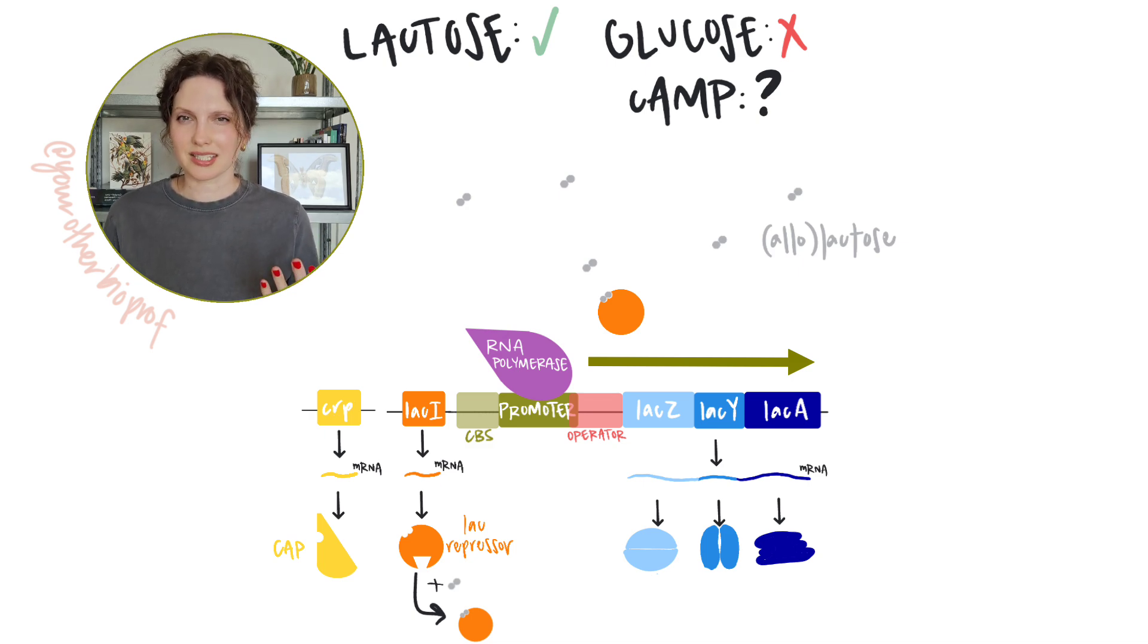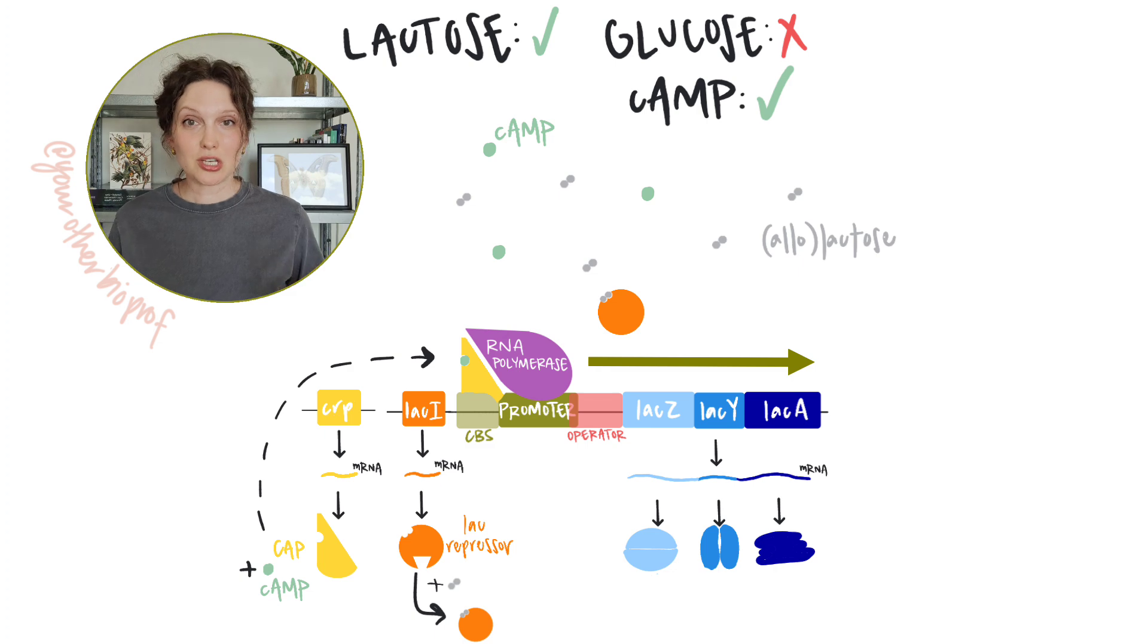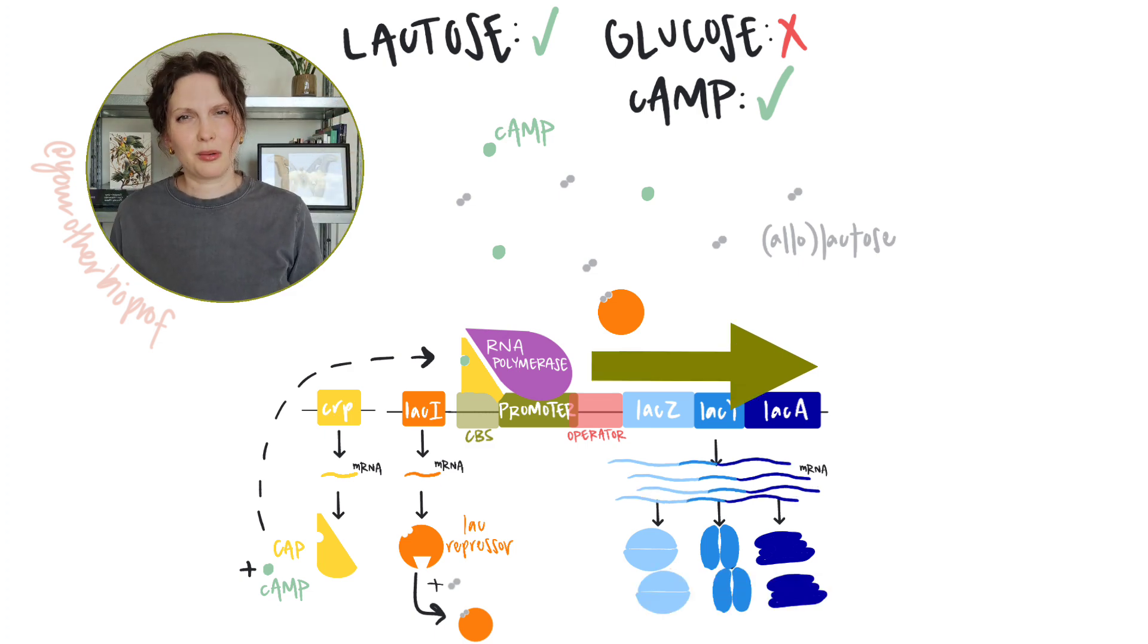What is the lack of glucose tell us? Well, low glucose means high or low cyclic AMP? High, right? Remember, it's an inverse relationship. So cyclic AMP is going to bind to CAP, activating CAP. CAP is going to bind to CAP binding site, and transcription is going to be increased even more. But why?